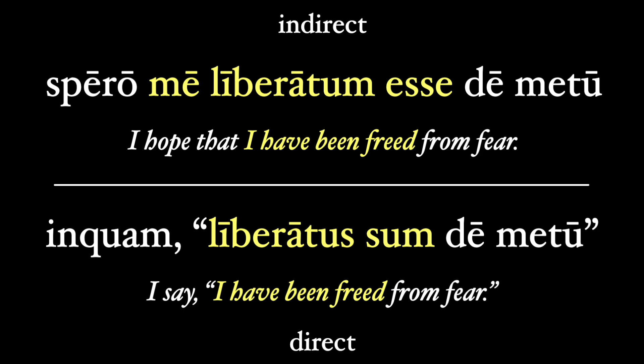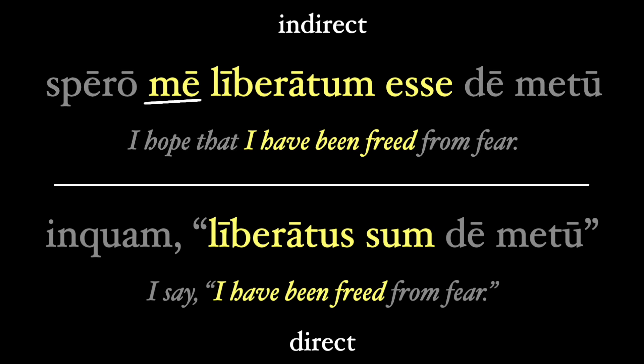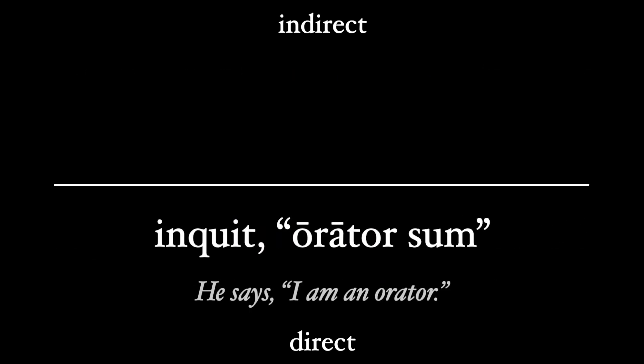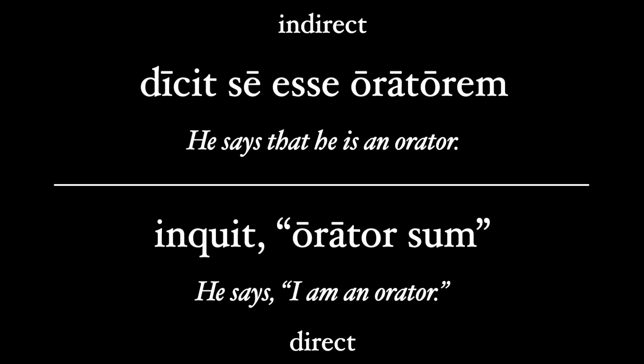In both previous examples the direct speech subject was understood, but it is almost always expressed in indirect speech. Consider: "Inquit orator sum" — he says, quote, "I am an orator" — but in indirect speech: "Dixit se esse oratorem" — he says that he is an orator. We use the pronoun se to keep the same subject as the main verb. Also note that orator changes from nominative to accusative so that it agrees in case with the subject accusative se.